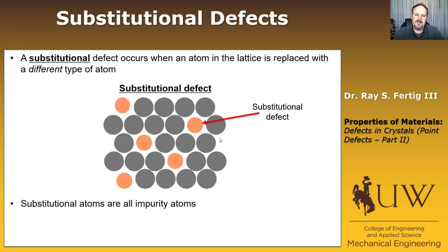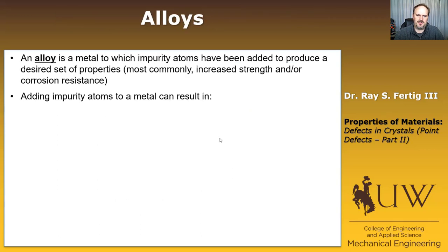So this leads us naturally to a discussion of alloys. An alloy is a metal that we've added impurity atoms to because we want to create some set of properties. Most commonly, we're trying to increase the strength or the corrosion resistance. When we add impurity atoms to a metal, it can result in one of two things. One is it can create a second phase in the material. We haven't talked about phases yet, but we're going to later in class. So I'm just going to leave that be for right now.